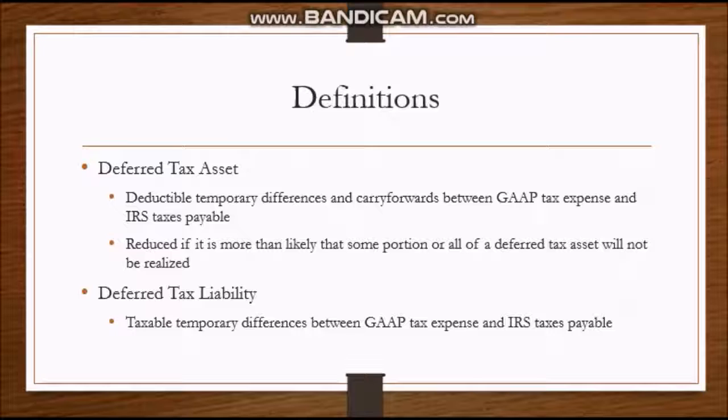Before I dive into the problems, I wanted to go over the definitions of deferred tax asset and deferred tax liability. The deferred tax asset is a deductible temporary difference carry forward between GAAP tax expense and IRS taxes payable. Basically, if we record our GAAP tax expense at a greater value than the IRS taxes payable, that difference is going to be the deferred tax asset, which is a good thing for us.